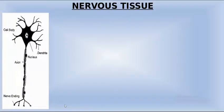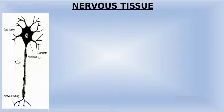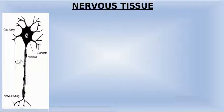The last part is nervous tissue. Here you can see the structure of a neuron, which has a typical irregular shape. It has a cell body with branches called dendrites and a nucleus. One dendrite is elongated into a tube-like structure with a sheath, called the axon, and the ending part is called the nerve ending.